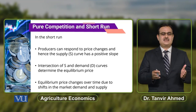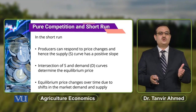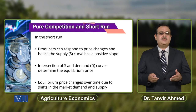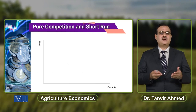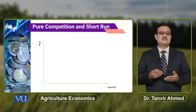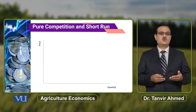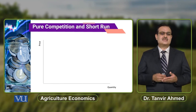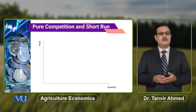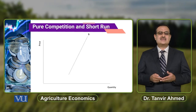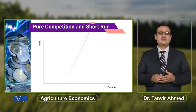यह equilibrium change हो सकता है if there is any shift in demand and supply curve. इसे understand करने के लिए, suppose हम एक example लेते हैं of agricultural output produced by a farmer. Horizontal axis पे हम agriculture output की quantity ले रहे हैं और price vertical axis पे ले रहे हैं.